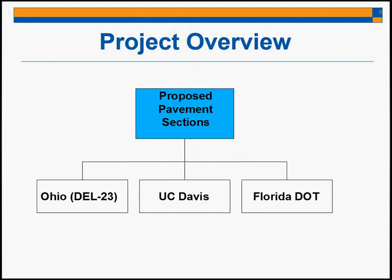The proposed pavement sections — there are three. One is in Ohio, north of Columbus, with three instrumented full-depth pavement sections where the AC thickness varies between 12 and 15 inches. UC Davis used reclaimed asphalt pavement, and from Florida DOT, we have two thin overlays.